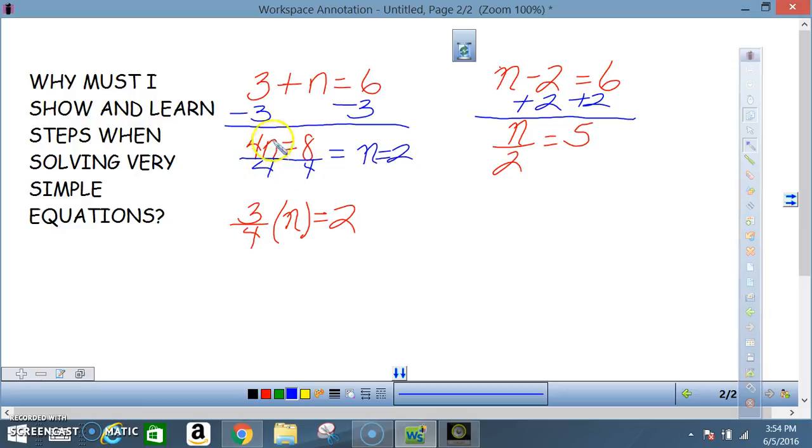So once again, what's important is to know the operation - what operation did I use here? I had 4 times n, so I use the operation involving division: divided by 4, divided by 4. That's what's most important here. I got n divided by 2 - most of us are going to say n over 2, but that's read as n divided by 2 is equal to 5.